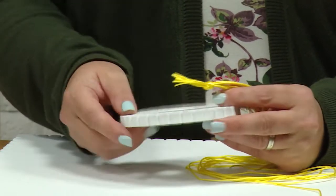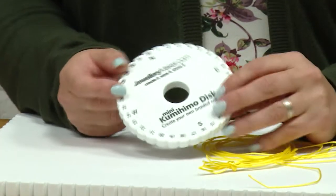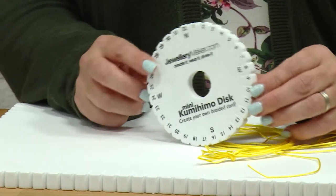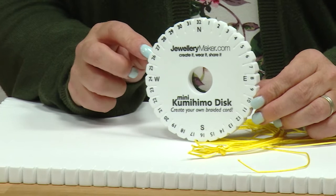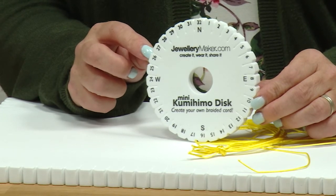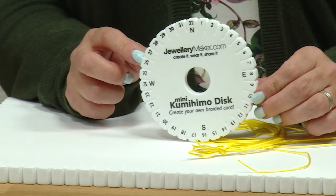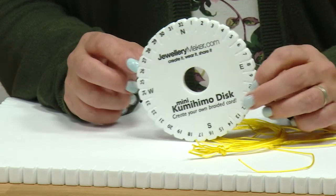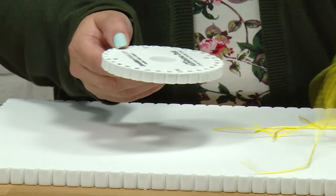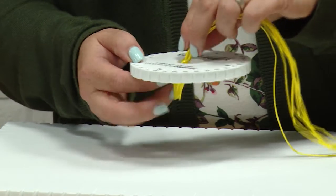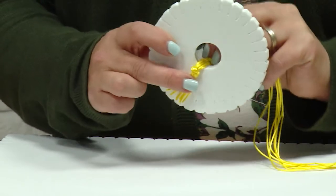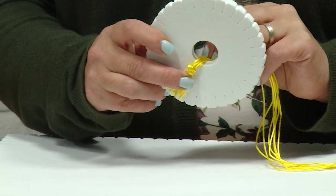So taking my kumihimo disc, as you can see on the kumihimo disc, we have got letters. So we've got the north, south, east and west points on our kumihimo disc. These are what we're going to start with as our reference points. So we take the knot of our eight cords and we pop it down through the middle and all I'm doing is just holding it steady with my finger on the back.